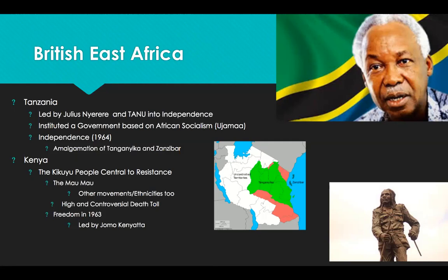Some of his peers at the time were Oginga Odinga and Tom Mboya, who was killed a couple of years into independence. Interestingly, Oginga Odinga's son is Raila Odinga, and Jomo Kenyatta's son is Uhuru Kenyatta — and those two are the two most prominent political leaders, albeit in opposite parties in Kenya right now. So they are almost like legacy leaders. That's a little bit about Kenya and its road to independence.